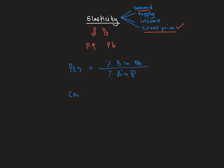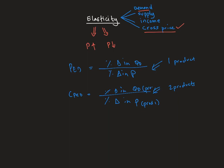With regards to cross price elasticity of demand we also have the same formula — percentage change in quantity demanded over percentage change in price — but the difference is that price elasticity of demand focused on one product, while cross price elasticity of demand focuses on two products. We show this as the percentage change in quantity demanded of product two over the percentage change in price of product one, to see the reaction in consumption of product two when the price of product one changes.